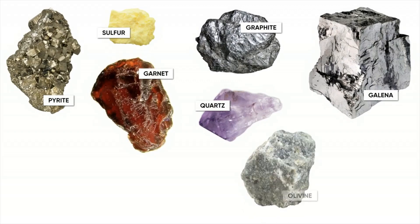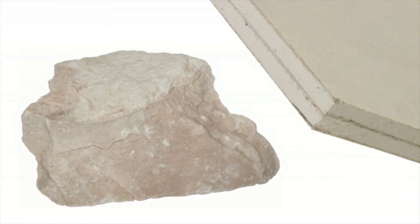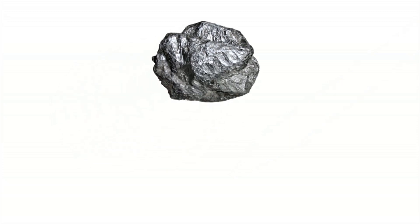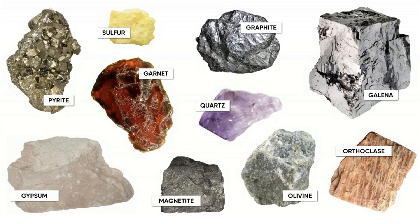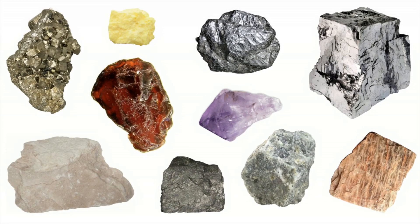There are many, many minerals that exist on earth. Here are some of the more common ones — including things like quartz and garnet, magnetite and sulfur. Minerals have a lot of uses, and we come across them in our day-to-day life. Gypsum is used in drywall, which makes up the walls around us in most buildings. Graphite is used in pencils — what we call pencil lead is actually the mineral graphite. We even use minerals for jewelry, like amethyst, which is a variety of quartz.